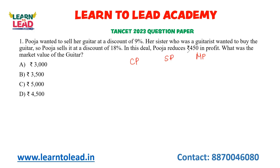Why do you discount that marked price? That is why you are offering a discount — they don't call it a loss. The offer discount is on the market price. So if you are giving a discount on the marked price, you give the discount. If you are selling a product to customers, the selling price is the final price. Now, Pooja wanted to sell the guitar at a 9% discount, but because the buyer is her sister, she gives an 18% discount.